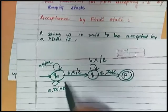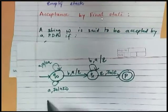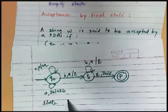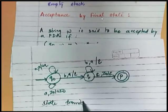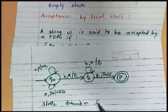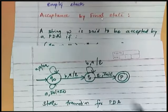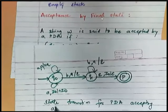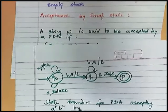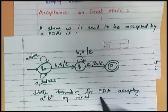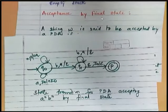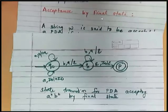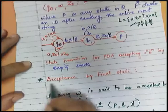So in this way you can represent the state transition diagram for PDA accepting a^n b^n by final state. I hope this is clear to you. For two marks or four marks you will be getting this question.